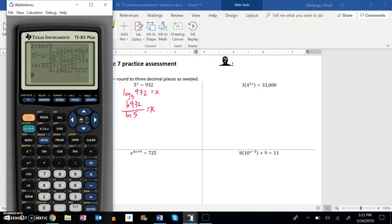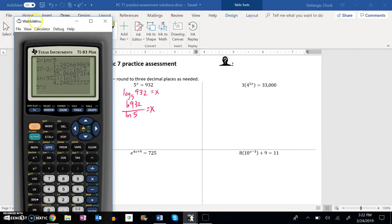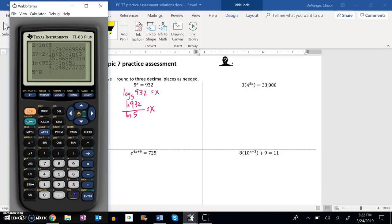Let me check it real quick. 5 to that power should give me 932. So 5 to the power of my answer... 932, that works.